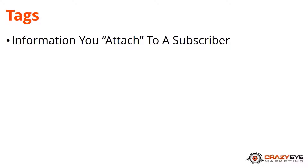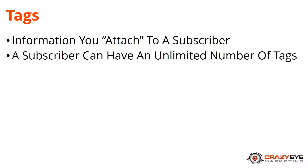In this video we'll be discussing tags or tagging within ActiveCampaign. A tag is a piece of information you attach to a subscriber, and a subscriber can have an unlimited number of tags. There are pros and cons to this — since you can have an unlimited number of tags there is a lot of flexibility, but also a lot of room to make things very complicated.